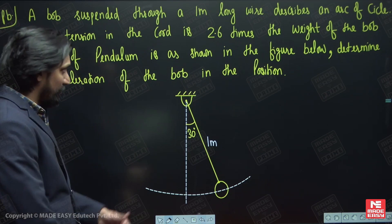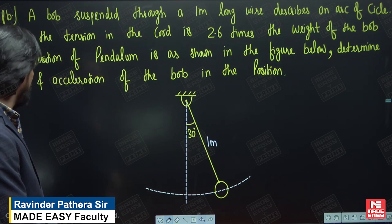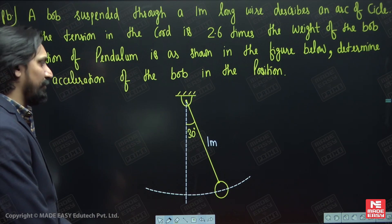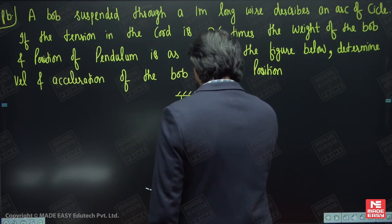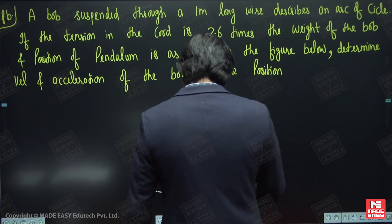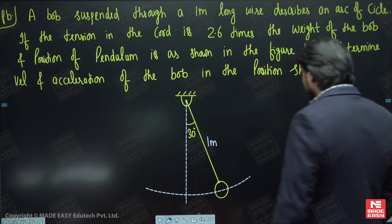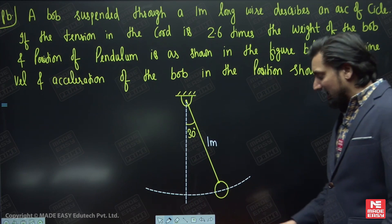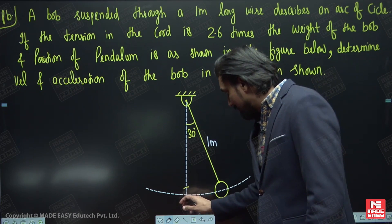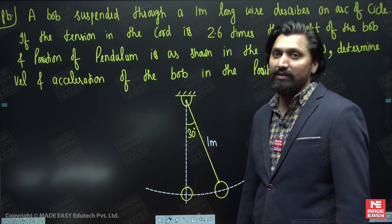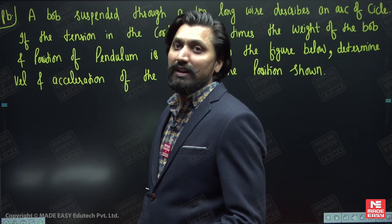The position of the pendulum is as shown in the figure, making an angle of 30 degrees with the vertical. We need to determine the velocity and acceleration of the bob in this position. Unlike problems discussed in class where the bob is at the mean position and tangential acceleration is zero, here the tangential acceleration will be non-zero and needs to be calculated.